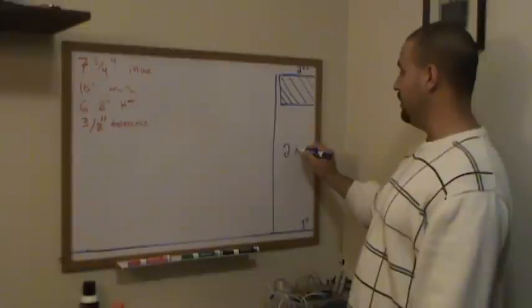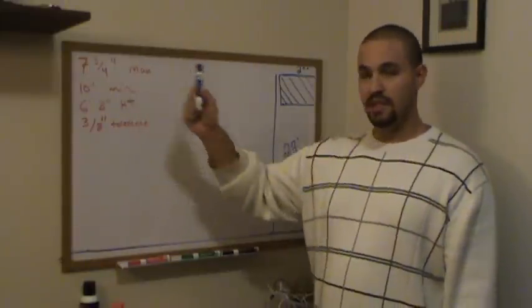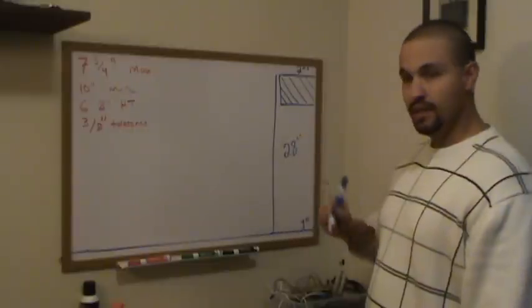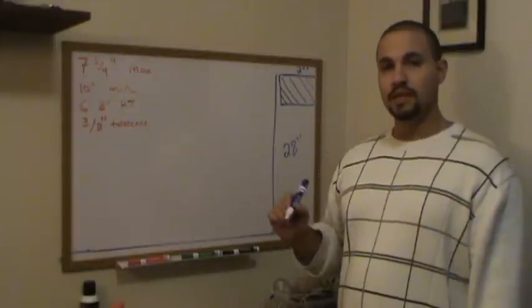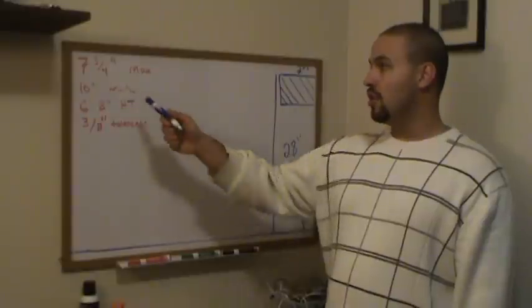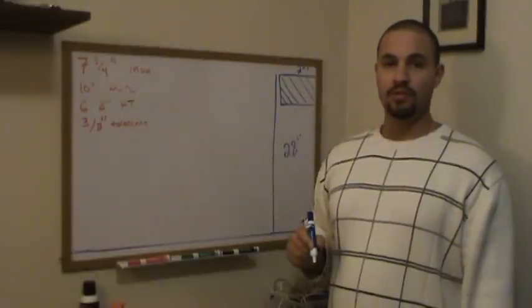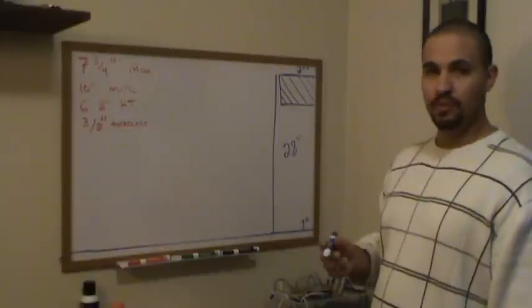In this example it will be 28 inches. Now generally you would just take 7 3 quarters and try to divide it into 28 to figure out how many steps you have, but that will not work in this example. Also, it usually doesn't work in real life. So as long as we use a number less than 7 3 quarters of an inch, we should be ok. For this example, the number will be 7.